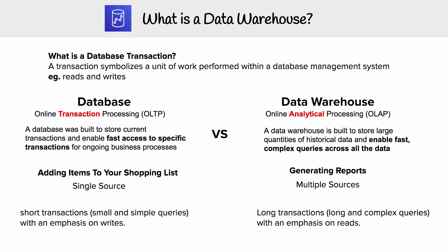A database and a data warehouse are going to treat transactions differently. For a database, which runs an online transactional processing system — OLTP — the transactions are going to be short. As you can see at the bottom here, we say short transactions, meaning small and simple queries with an emphasis on writes.